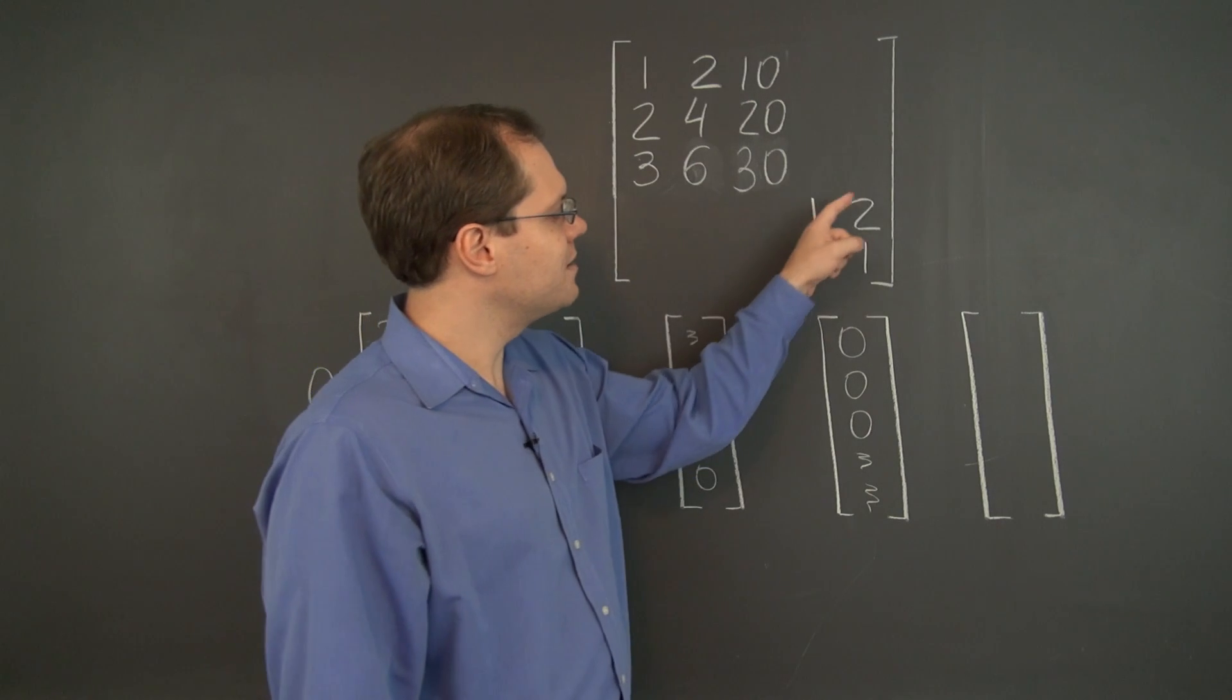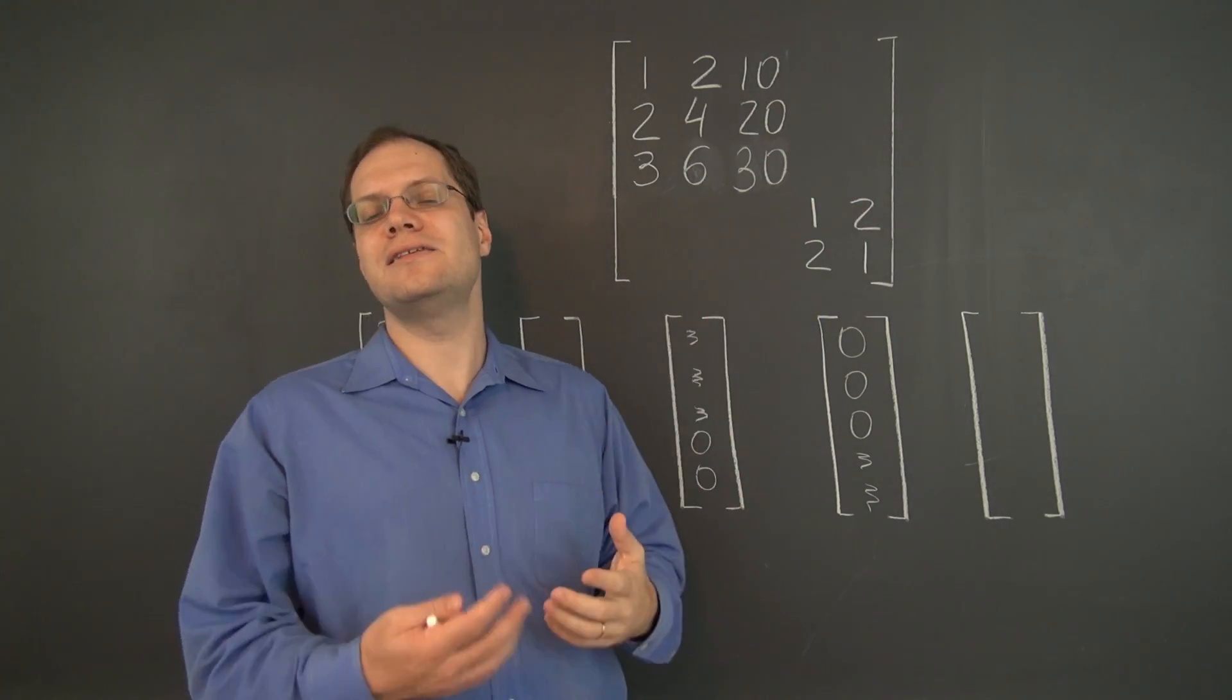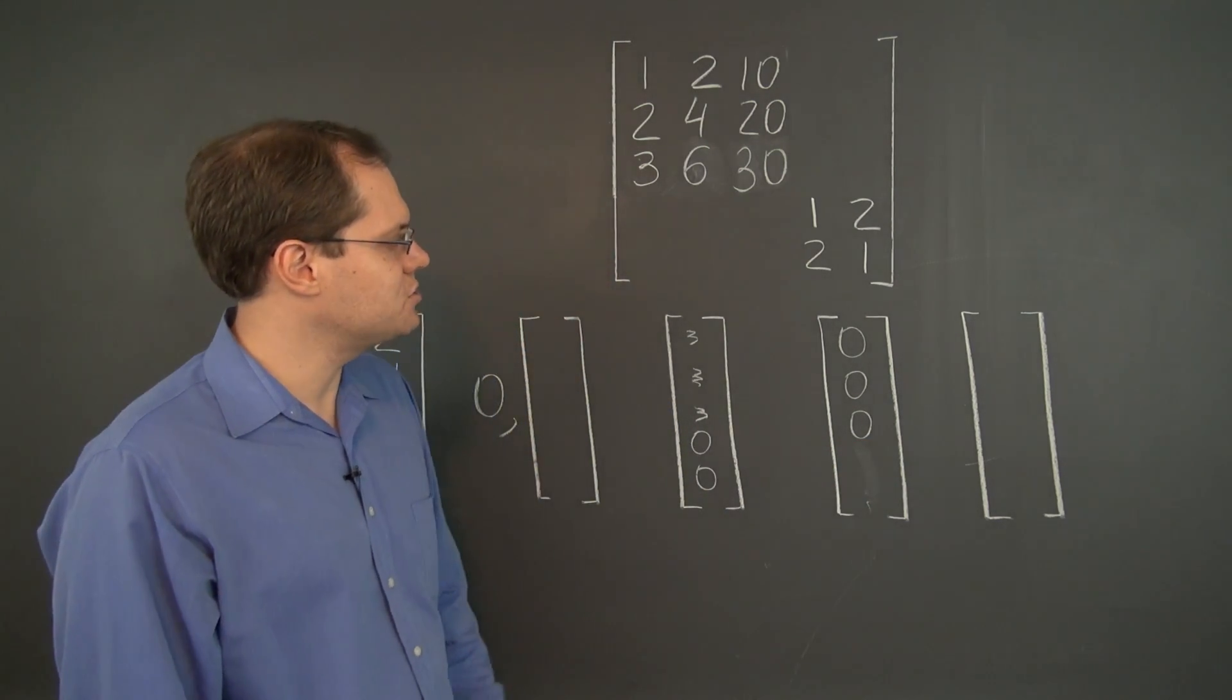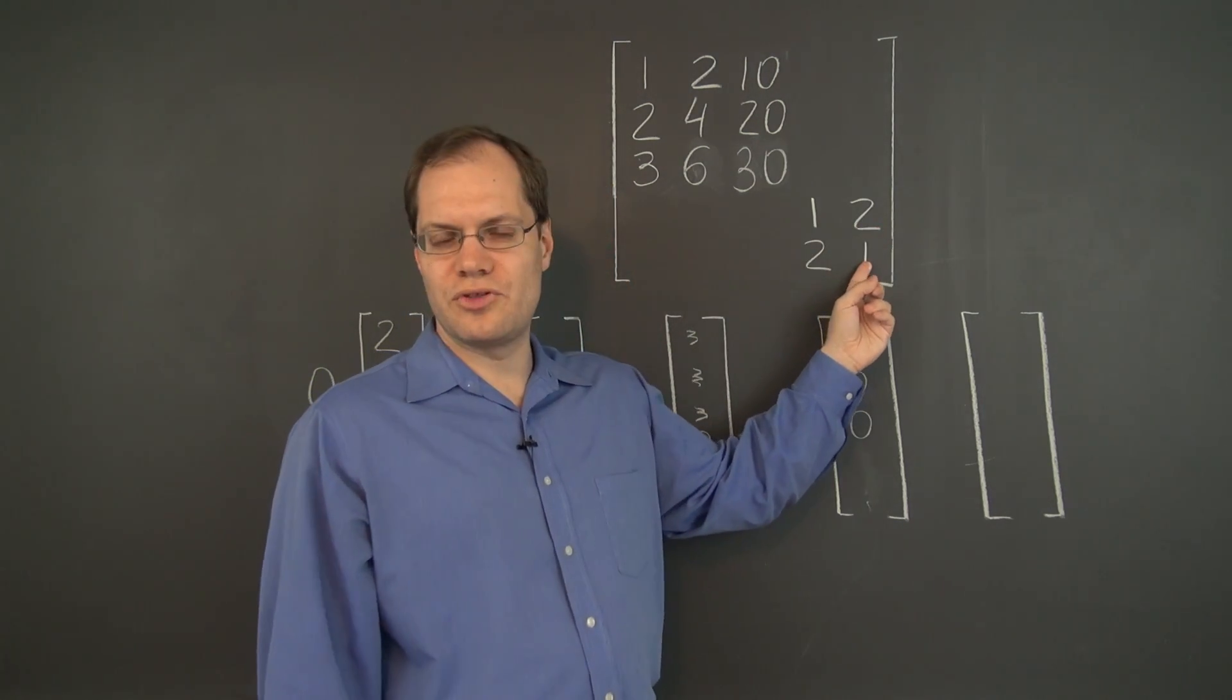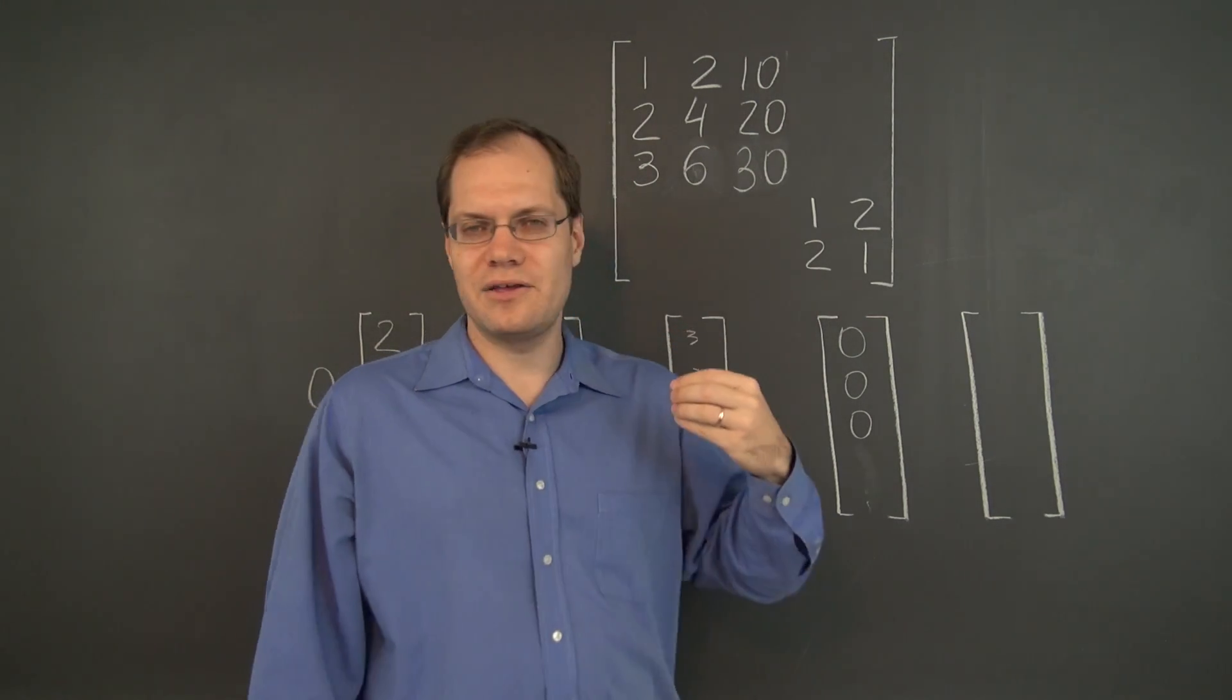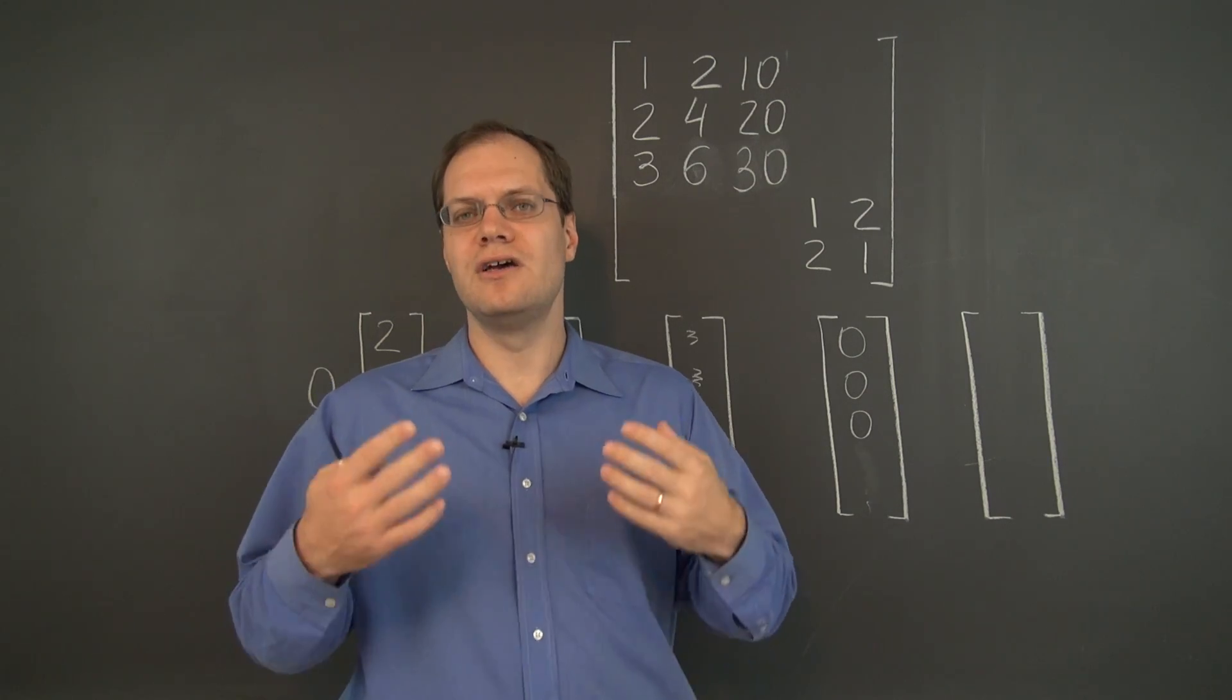So actually, let's for a moment now concentrate on this one. Because a non-zero eigenvalue is a little bit more insightful from the point of view of this matrix. So here, the two rows each add up to three. So there is an eigenvalue that equals three. And the corresponding eigenvector is one one.